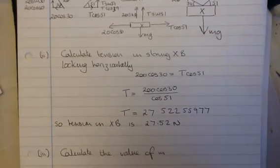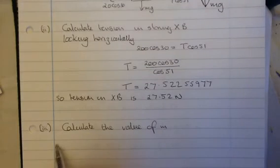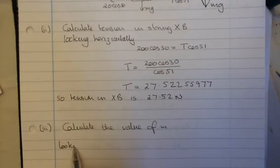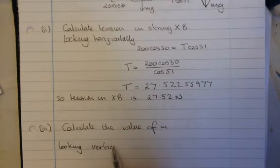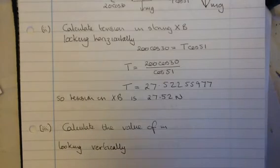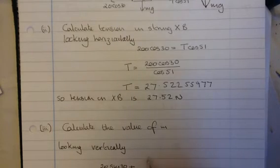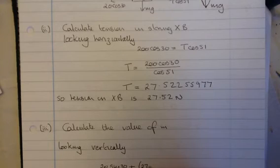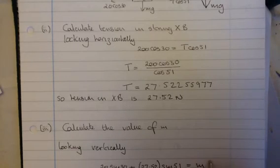And we're asked then to calculate the value of M. So, we're going to look vertically. So, looking vertically, again, because we're in equilibrium, forces up must equal the forces down. So, we have 20 sin 30 plus T, which we now know, 27.52 sin 51 is equal to MG, which is 10.